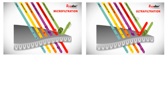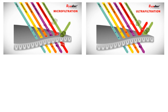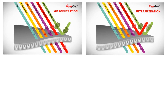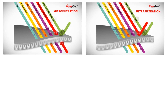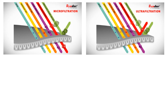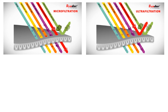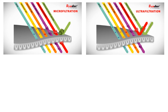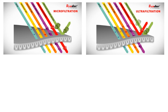Ultrafiltration has smaller pores than microfiltration membranes and can reject particles as small as 0.01 microns, which includes most viruses. So as you can see, microfiltration will reject bacteria, and ultrafiltration will reject bacteria as well as viruses.